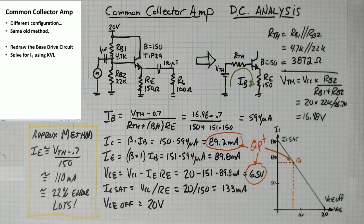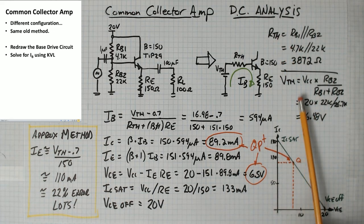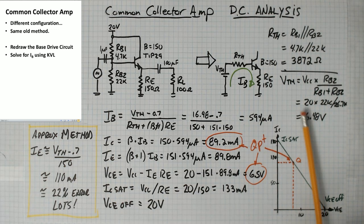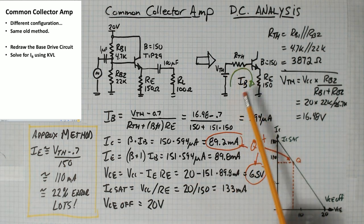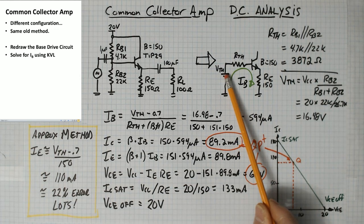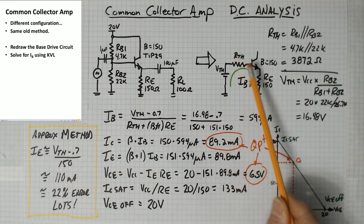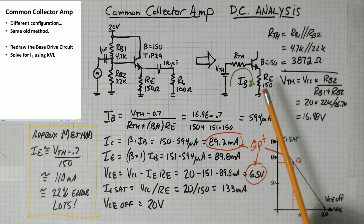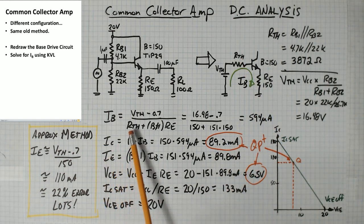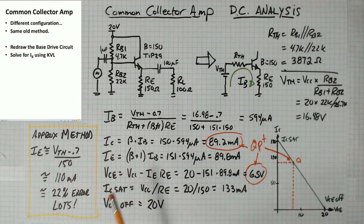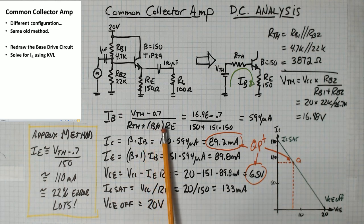Once you have that, you can solve for IB using KVL. So here I've gotten RTH 3872, BTH is 16.4. So that's this voltage and resistance. Now I can do this loop. So if I take that voltage and I subtract that one, that's the voltage across these two resistors. If I move that over there, I would get IB. So BTH minus 0.7 over RTH plus beta plus 1 times RE.